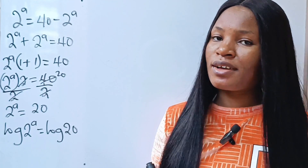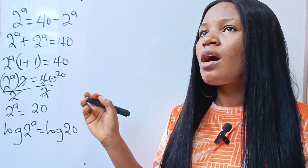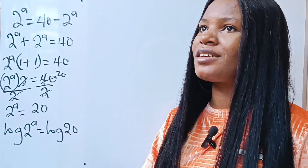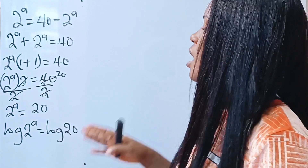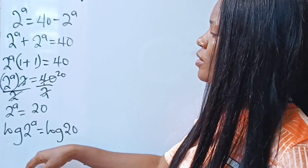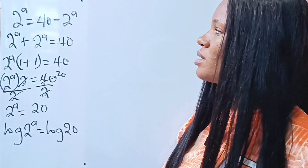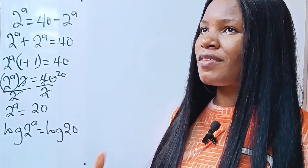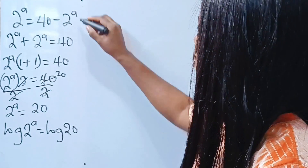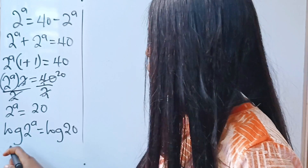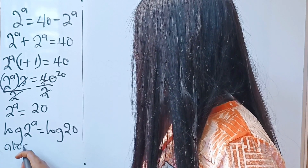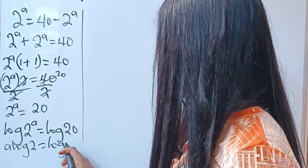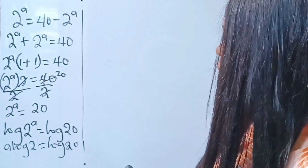I would like you to stay to the end of this particular solution we are trying to find. Because the amazing part is where we prove that what we are solving is right. So I would advise you to stay to the end. Now, this is what we have: a log 2 is equal to log 20.